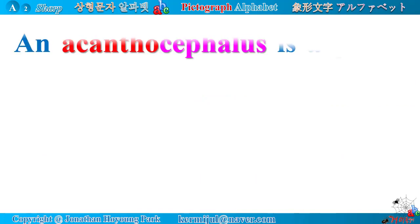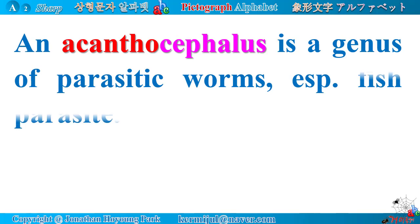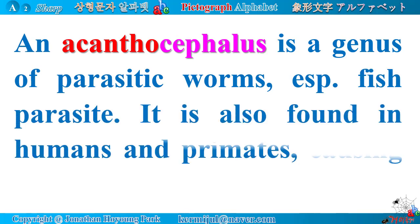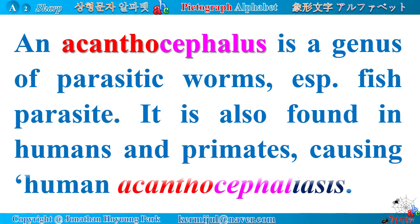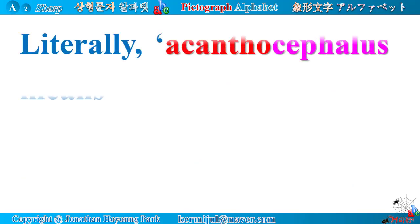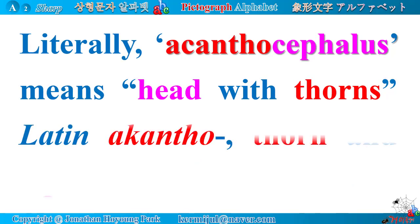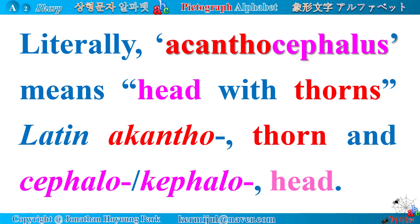An acanthocephalus is a genus of parasitic worms, especially a fish parasite. It is also found in humans and primates, causing human acanthocephaliasis. Literally, acanthocephalus means 'head with thorns': Latin root acantho means thorn, and Latin root cephalo — and Greek root cephalo — mean head, respectively.